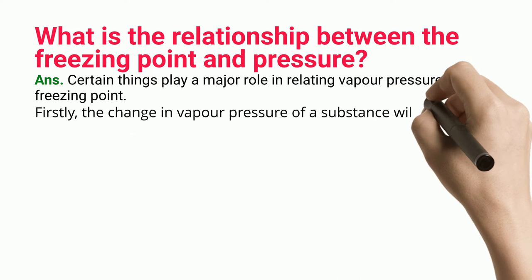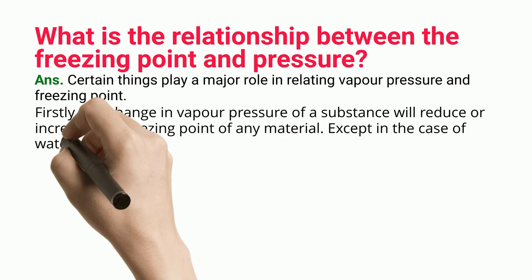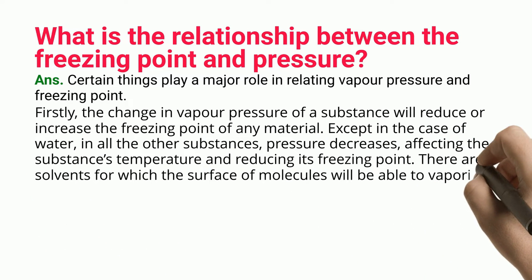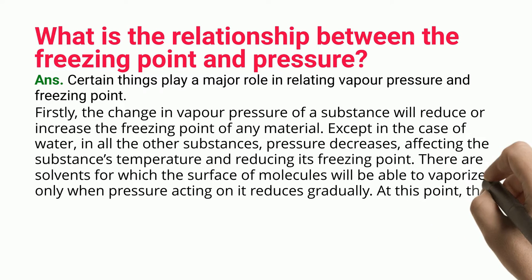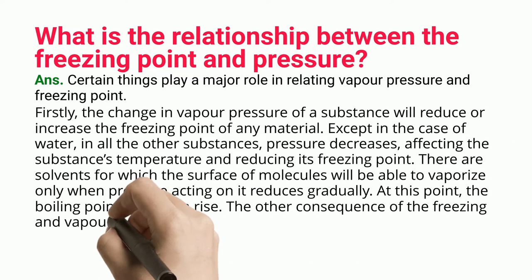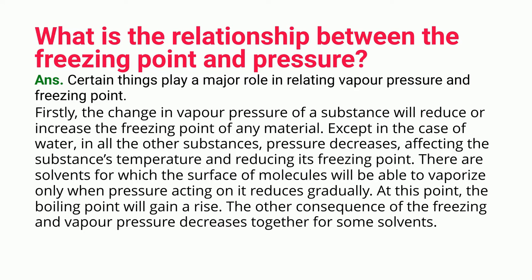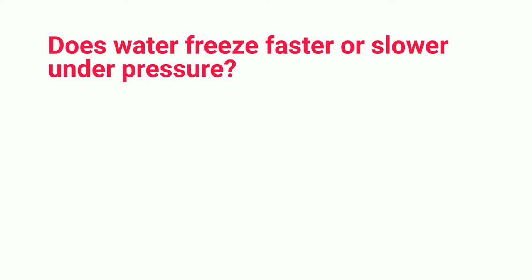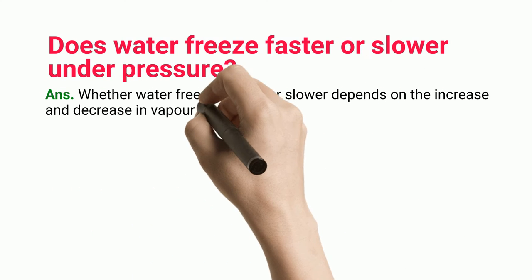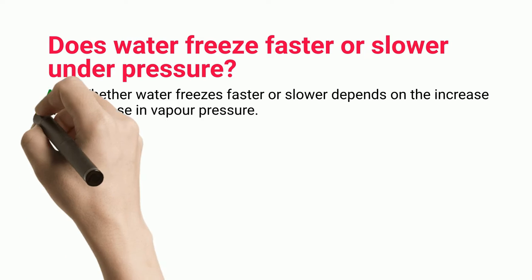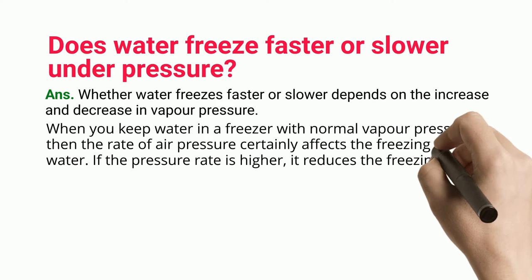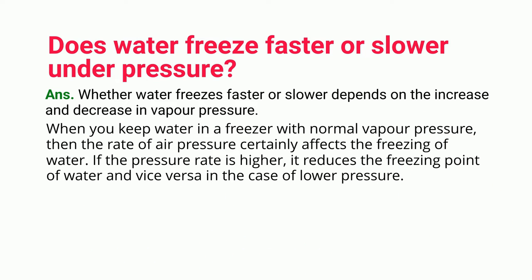What is the relationship between freezing point and pressure? The change in vapor pressure of a substance will reduce or increase the freezing point of any material. Except in the case of water, in all other substances pressure decreases affect the substance's temperature and reduce its freezing point. Whether water freezes faster or slower depends on the increase and decrease in vapor pressure. When water is kept in a freezer with normal vapor pressure, the rate of air pressure certainly affects its freezing. If the pressure rate is higher, it reduces the freezing point of water, and vice versa for lower pressure.